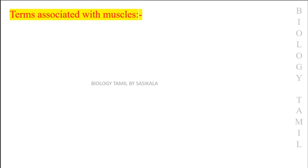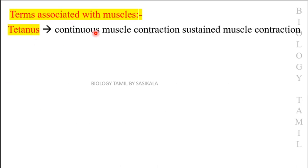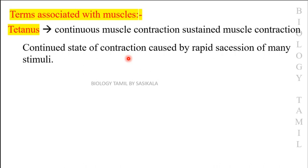Muscle disorders associated with muscle function include Tetanus — a continuous or sustained muscle contraction caused by rapid repeated stimulation of many stimuli, resulting in a continuous state of contraction.